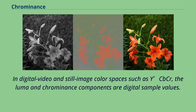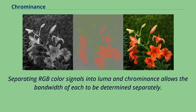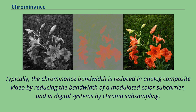In digital video and still image color spaces such as YCbCr, the luma and chrominance components are digital sample values. Separating RGB color signals into luma and chrominance allows the bandwidth of each to be determined separately. Typically, the chrominance bandwidth is reduced in analog composite video by reducing the bandwidth of a modulated color subcarrier, and in digital systems by chroma subsampling.